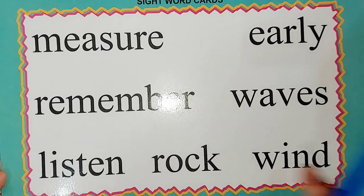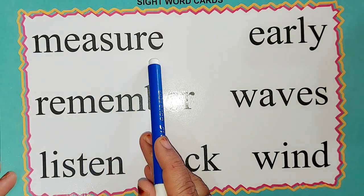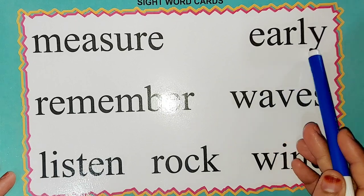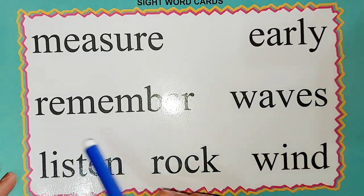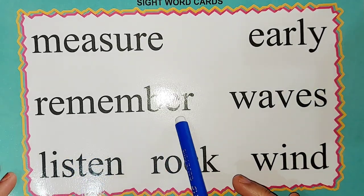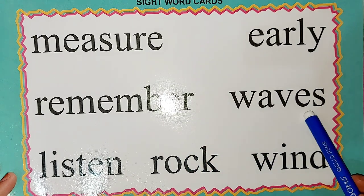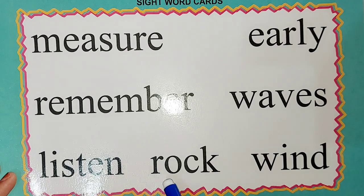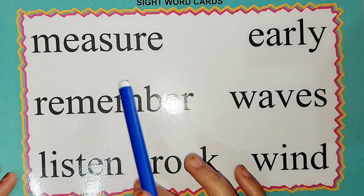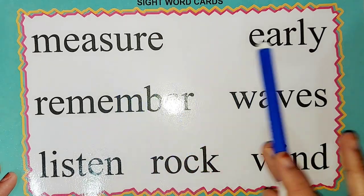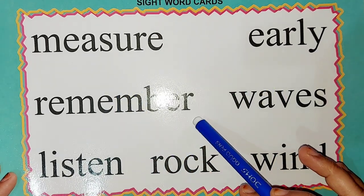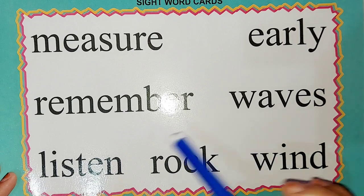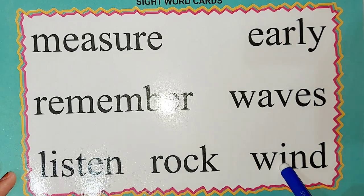The next word is M-E-A-S-U-R-E: measure. E-A-R-L-Y: early. R-E-M-E-M-B-E-R: remember. W-A-V-E-S: waves. L-O-C-K — R-O-C-K: rock. W-I-N-D: wind. Once again: measure, early, remember, waves, listen, rock, wind.